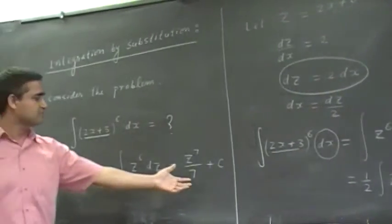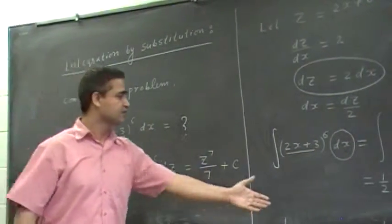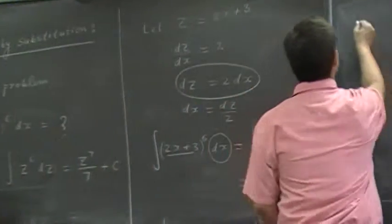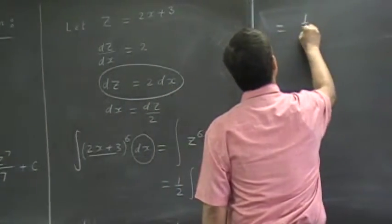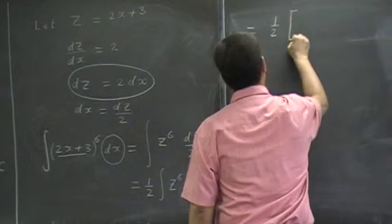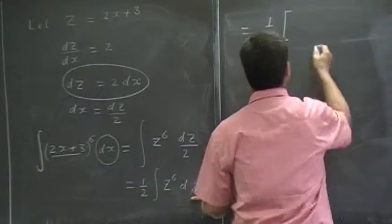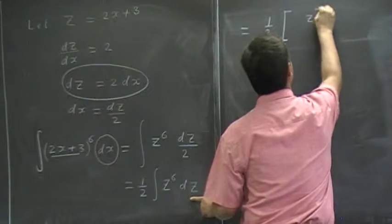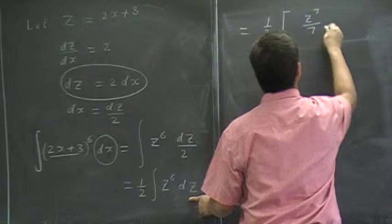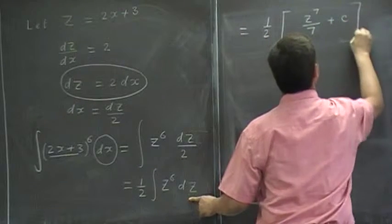See? If z to the 6 dz, then we can integrate right away. So, integral of this would be half, what is the integral of z to the 6? z to the 7 over 7 plus constant of integration, right?